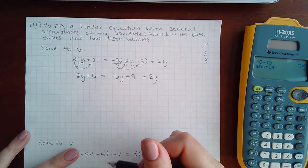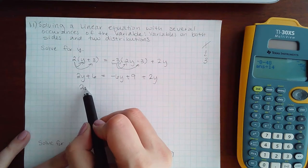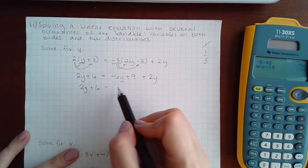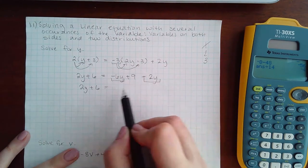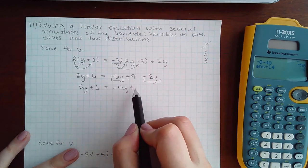Step three is to combine like terms. There's no terms to combine on the left and on the right we end up with -4y + 9.